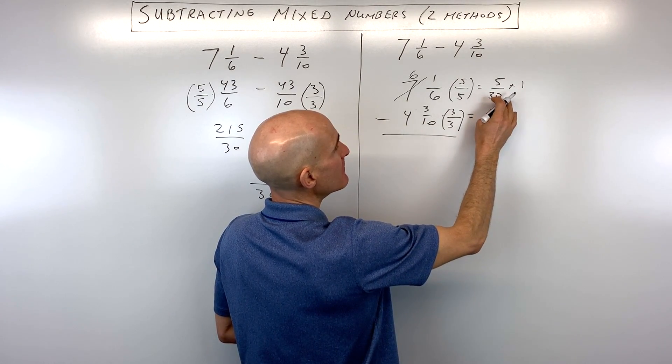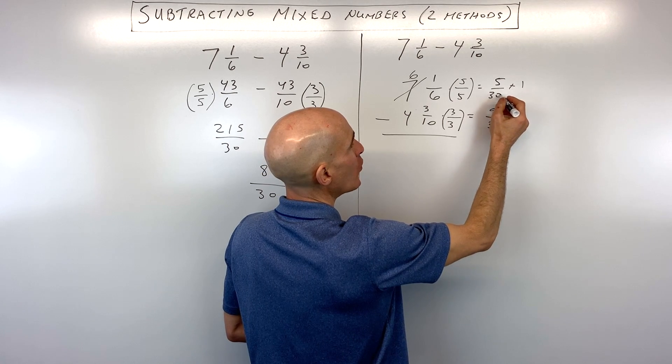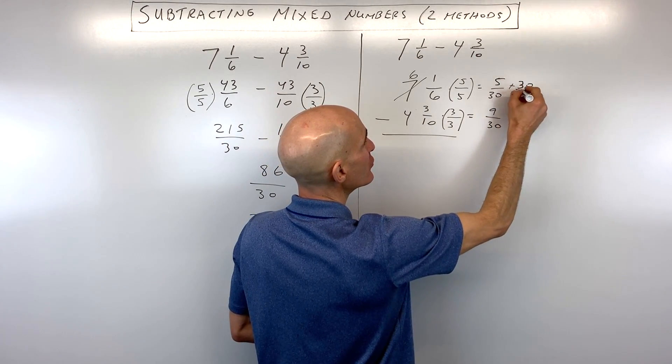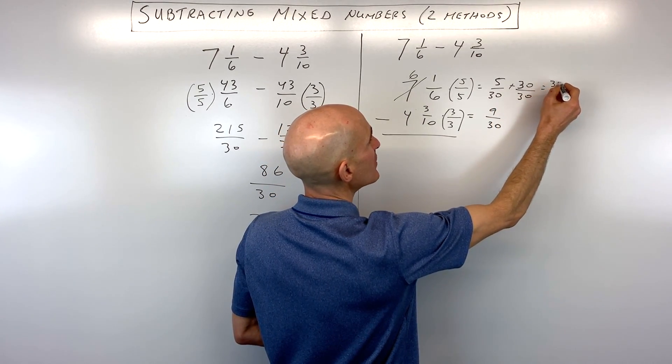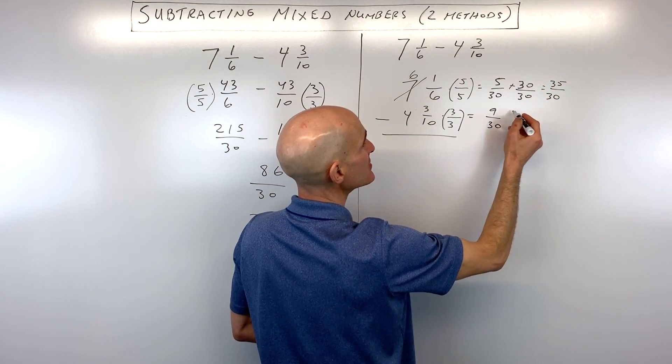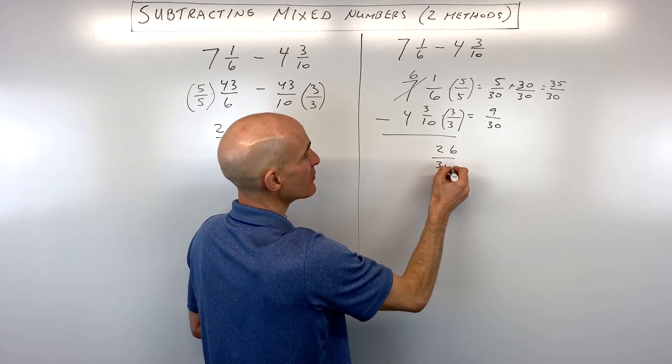But when we add 1, we really want this to be able to combine with this fraction here. So 1 is really the same thing as 30 over 30, because anything divided by itself is 1. So now what we really have here is we have 35 thirtieths minus 9 thirtieths, which is 26 thirtieths.